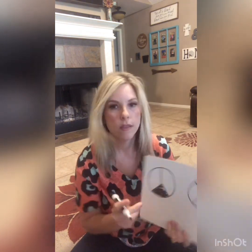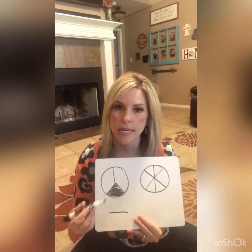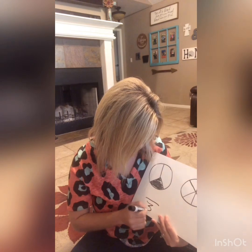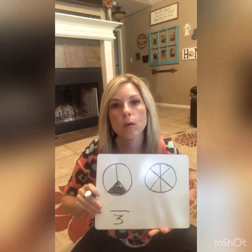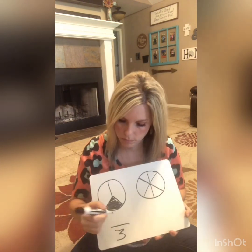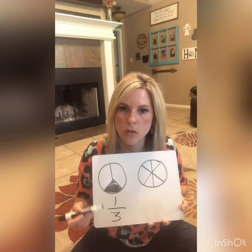I drew a couple of little fractions here, and I want us to name them — decide the numerator and denominator for each. So for this first one, I'm going to shade in this bottom piece. We know that our bottom number, our denominator, is the whole. How many pieces are in this whole? We have one, two, three — we have three pieces in our whole. Our top number, our numerator, is how many pieces are shaded. And how many parts are shaded in? Just one. So this represents one third — one piece is colored in out of a total of three pieces.